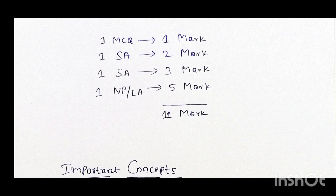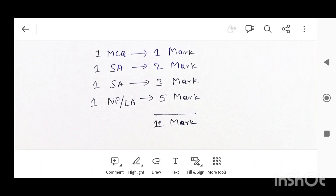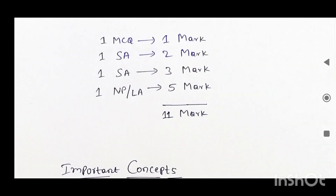And one another short answer of three mark type question, and one numerical problem — NP means numerical problem — or you may get a long answer. You have to get any one: either numerical problem or long answer, that of five marks. So the total is 11 marks, and if you prepare this chapter very well you are going to get full marks easily.